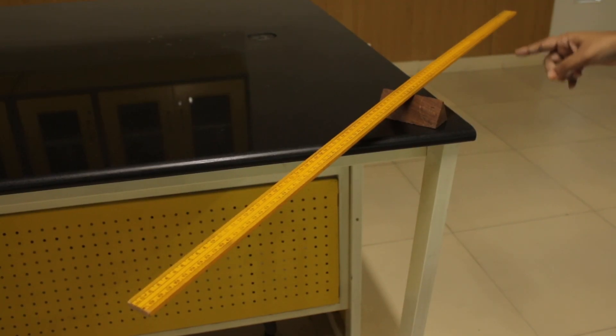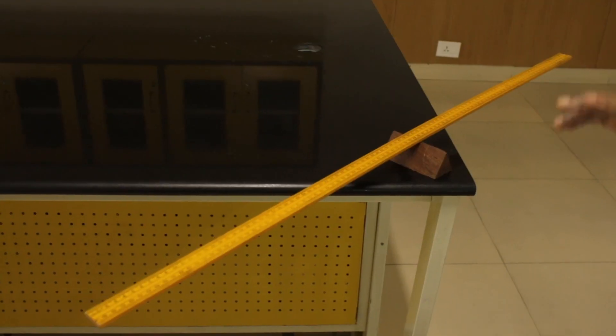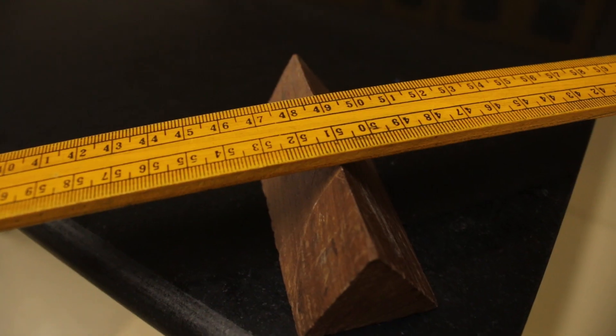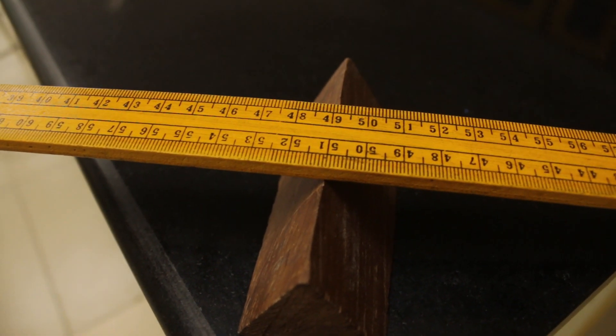The scale we use here is a non-uniform scale. The length is one meter, so ideally the center of gravity should be at the 50-centimeter mark.